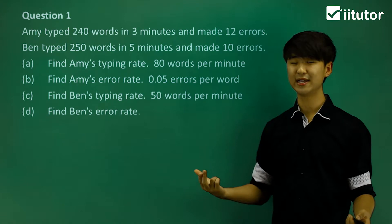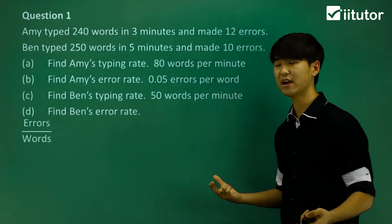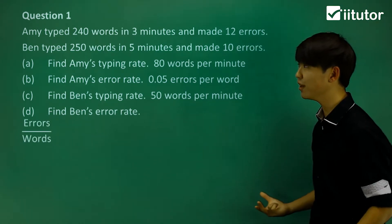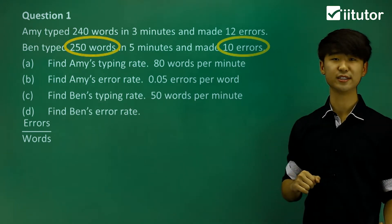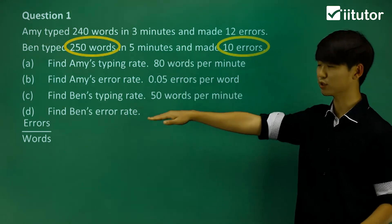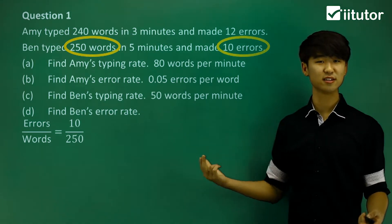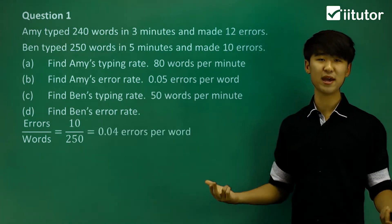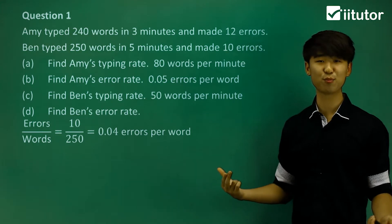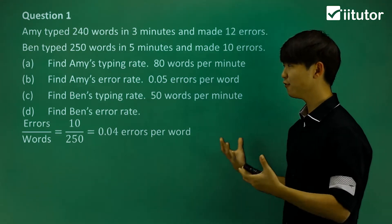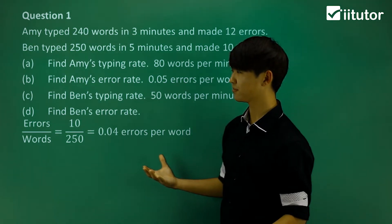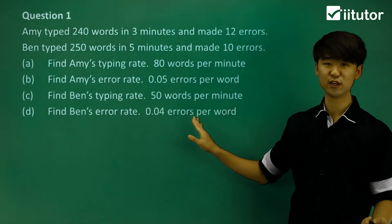Now finally, what about his error rate? Error, how many error did he do per word? Well, he did 10 errors in 250 words. So let's put those in. 10 errors out of the 250 words, let's calculate it. And he made an error rate of 0.04 errors for every word that he typed. So let's leave those information up here.